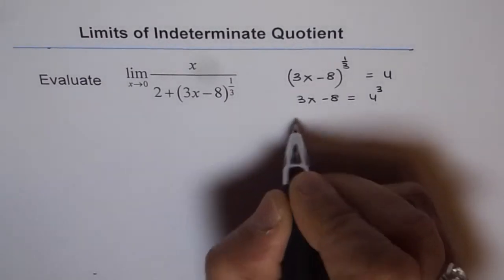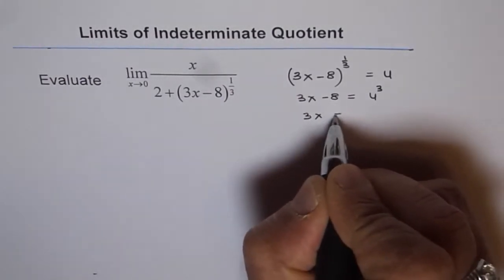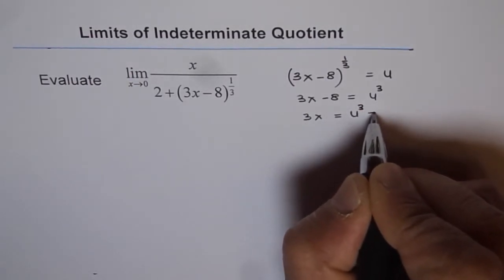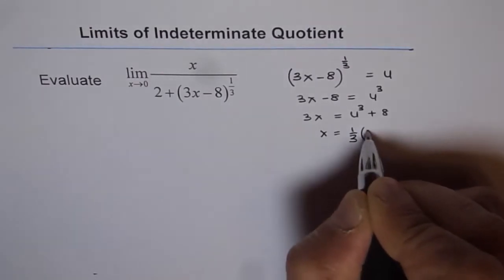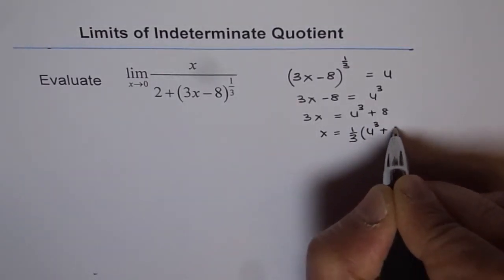Now we can solve for x. We get 3x equals to u cube plus 8 and x is equals to one third of u cube plus 8.